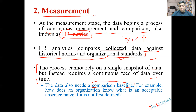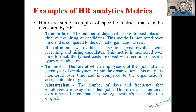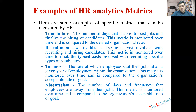For example, how does an organization know what is an acceptable absenteeism range? Some organizations may say two days absent per month is fine, while others allow three days. Examples of HR matrices include time to hire — how long the company takes to hire one employee or a batch — cost to hire one person, turnover rate in the organization, and absenteeism rate. We'll be talking about these in more detail.